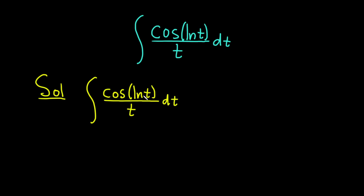And the obvious choice, perhaps, is to make a substitution. You want to let u be equal to the natural log of t, because it's the inside function that's usually a good first try.